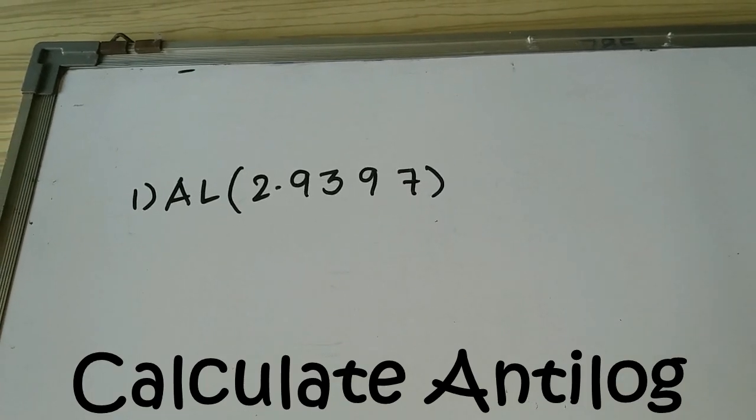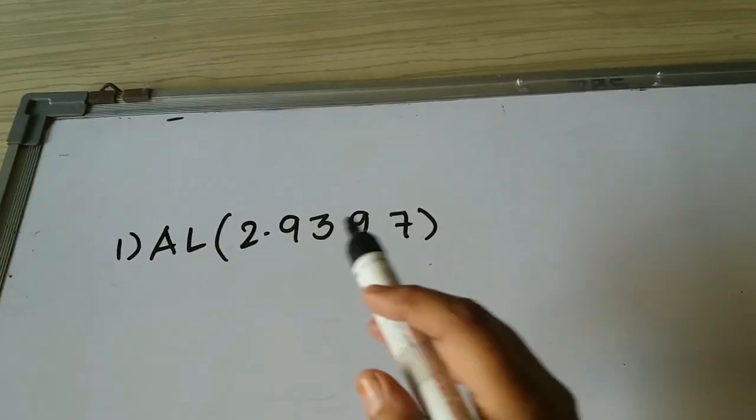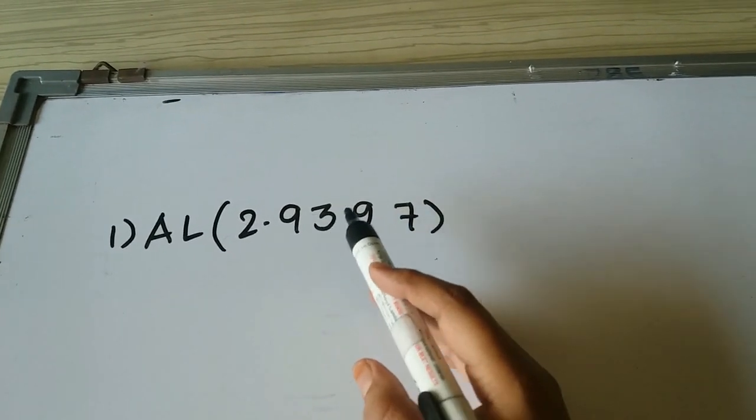We are going to see how to calculate antilog. Suppose this is my number 2.9397.